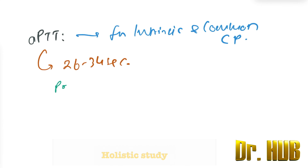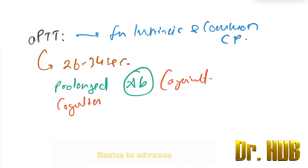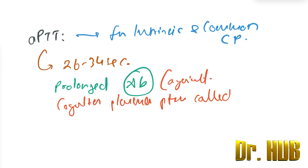A relatively rare cause of prolonged APTT is due to the presence of antibodies against the coagulation plasma proteins. These antibodies are called inhibitors.